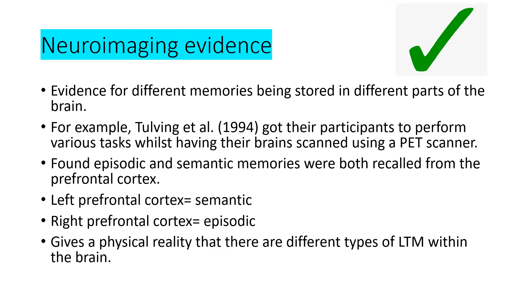A further strength is neuroimaging evidence — looking at different memories being stored in different parts of the brain. Tulving got participants to perform various tasks whilst having their brain scanned using a PET scanner. He found that episodic and semantic memories were both recalled from the prefrontal cortex, but more specifically the left prefrontal cortex is involved in semantic memories and the right prefrontal cortex is involved in episodic memories. A mnemonic tip: left and S for semantic, right and E for episodic. This neuroimaging evidence gives a physical reality that there are different types of long-term memory within the brain.